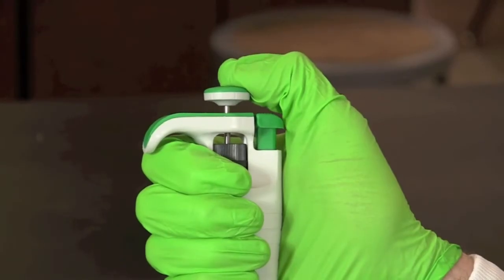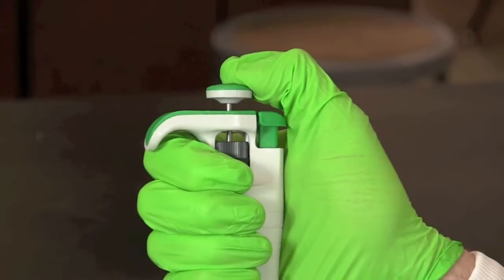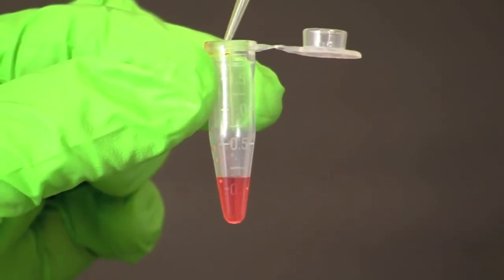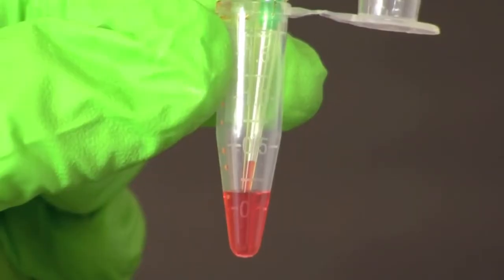To obtain a sample press the plunger button to the first stop and hold it there as you place the pipette tip into the tube holding your sample. Placing the tip near the bottom of the tube, withdraw the sample by slowly releasing the plunger button.